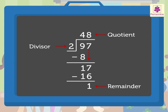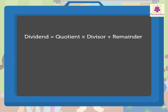The remainder here is 1. Did you know kids, we can also check our calculation. All we have to do is use the following relation: dividend is equal to quotient into divisor plus remainder. That is 48 into 2 plus 1, which is equal to 96 plus 1, is equal to 97. Isn't that interesting? The answer we get is the dividend itself, that is 97.